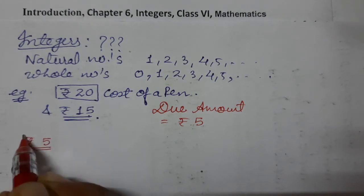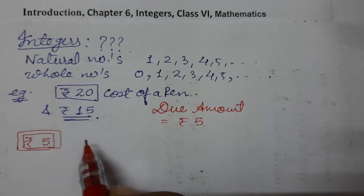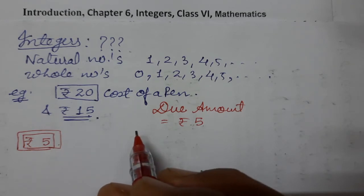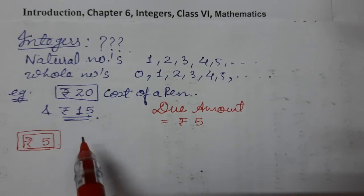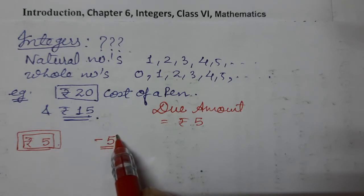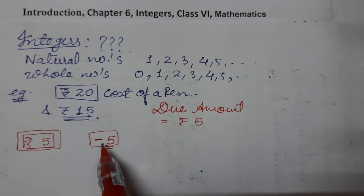The shopkeeper has to remember whether the 5 rupees has to be given or taken, so he uses a symbol or a sign. That is where negative numbers come in. Negative five means he needs five more rupees from you. Minus five indicates that he needs 5 rupees more from you.